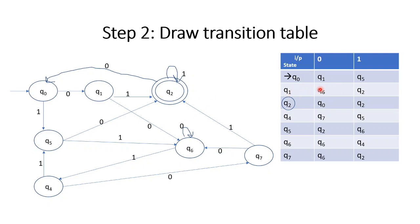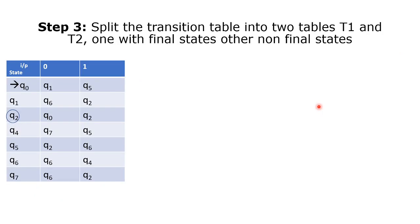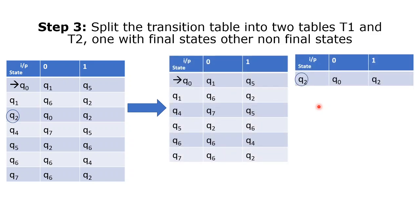Now we are going to divide this transition table into two parts: T1 and T2 — one containing non-final states and the other containing final states. Split the transition table into T1 with non-final states and T2 with final states.